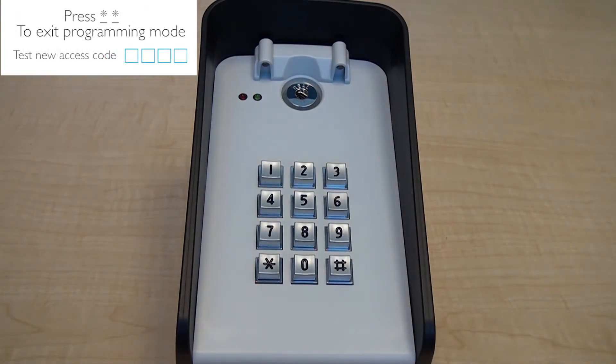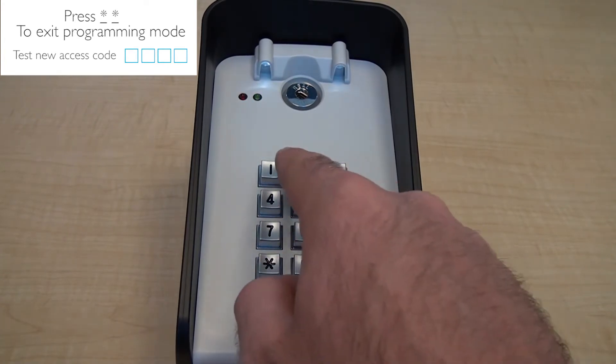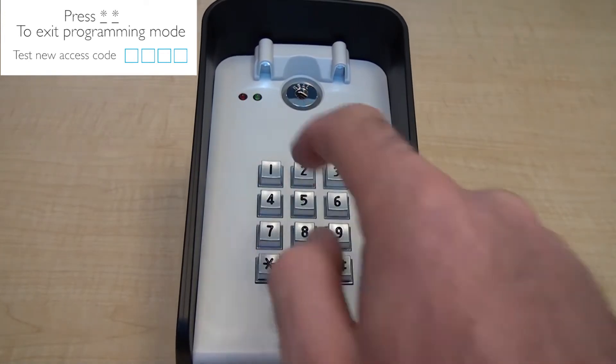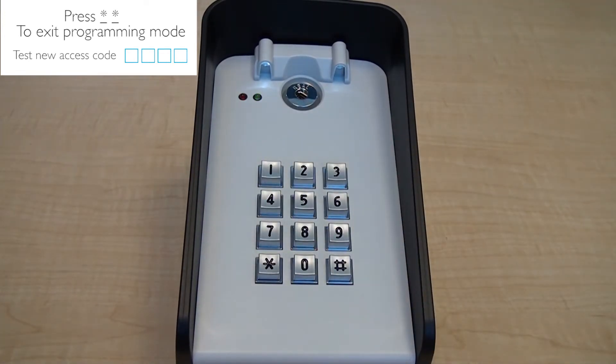To test the new added code, exit programming mode by pressing star twice. Enter the new code and the green light on the keypad will flash six times to confirm the code was added successfully.